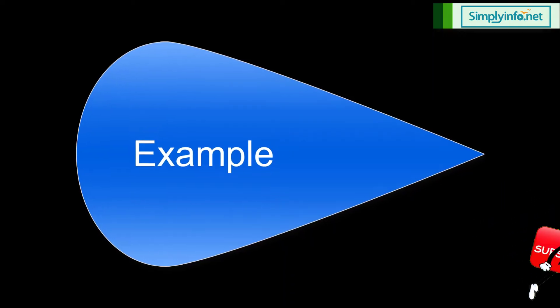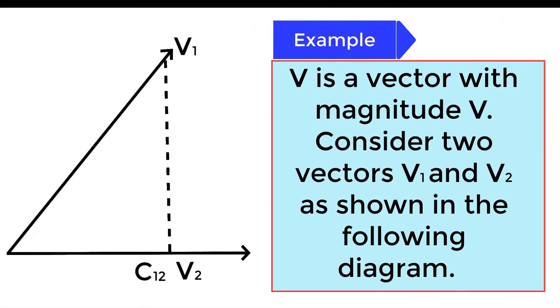Example: V is a vector with magnitude V. Consider two vectors V1 and V2 as shown in the following diagram.